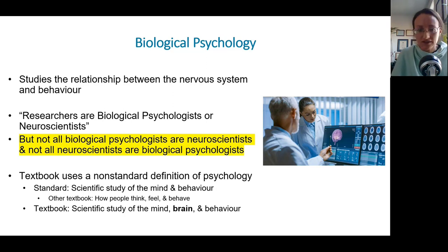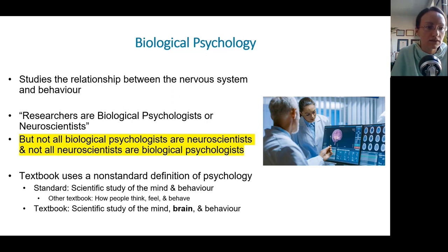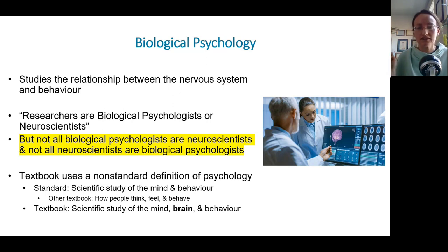They say that researchers in this area are called biological psychologists or neuroscientists, using those terms synonymously. I don't know about that, because not all biological psychologists are neuroscientists, and I've never met a neuroscientist who identified as a biological psychologist.